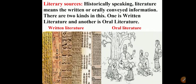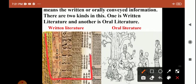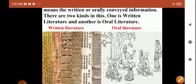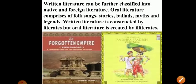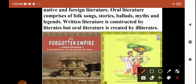You may be observing the second image, which shows a man orally explaining about history and what happened in the past — this is called oral literature. Written literature can be further classified into two parts: foreign literature and native literature.